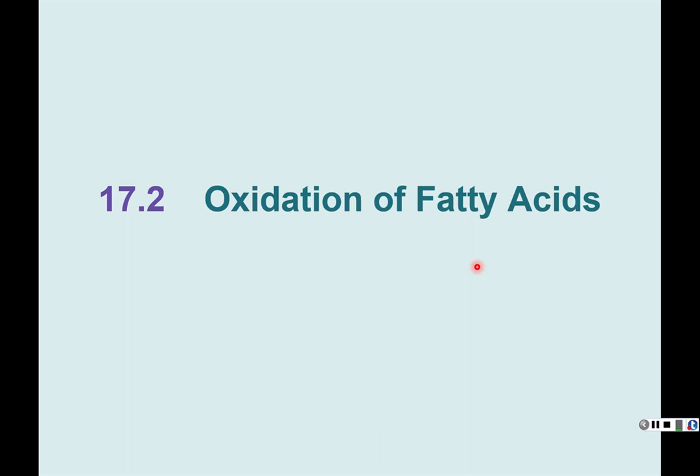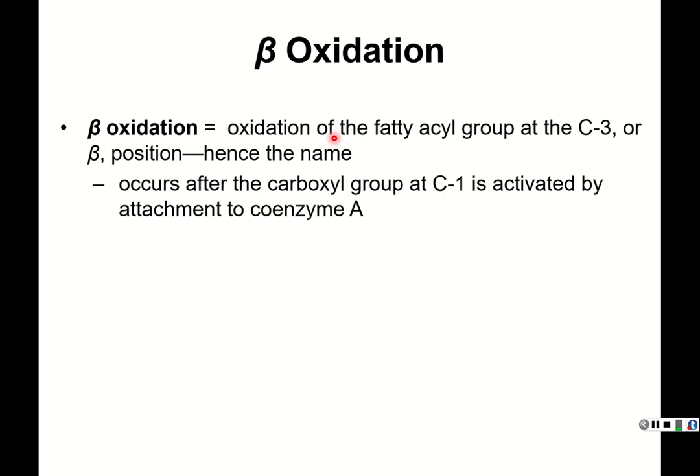Moving on to section two, where we'll spend most of our time: beta oxidation. Beta oxidation is simply the breakdown of a fatty acid — think of it like glycolysis for fatty acids. It's called beta oxidation because the oxidation occurs at C3, the beta position of the fatty acid.